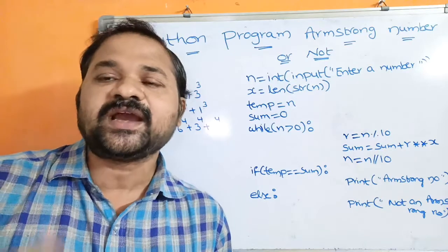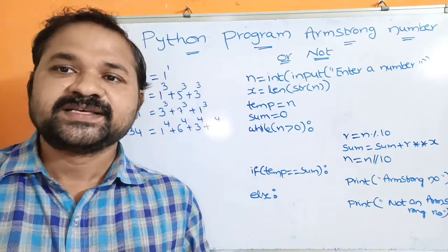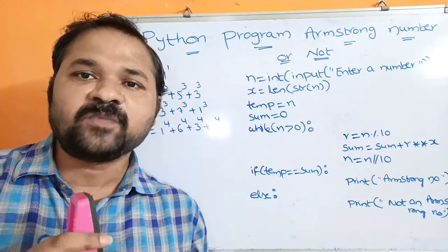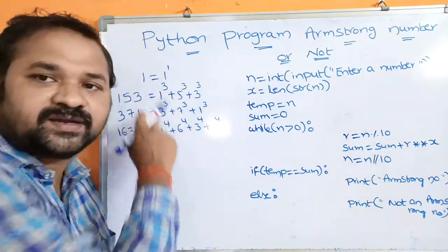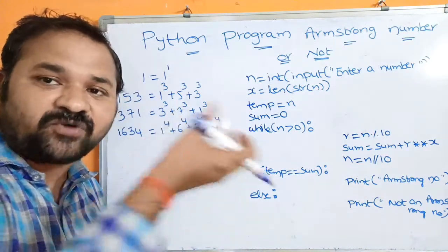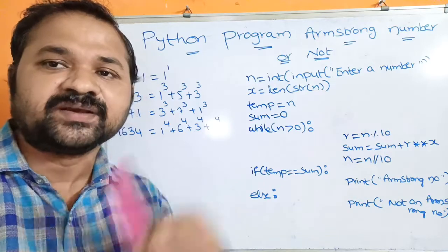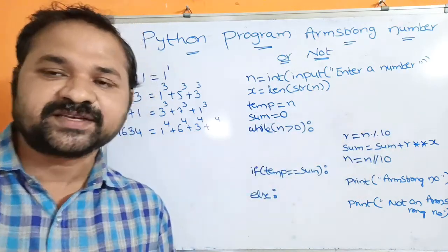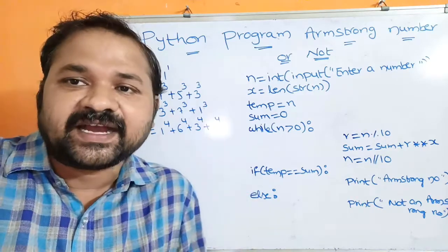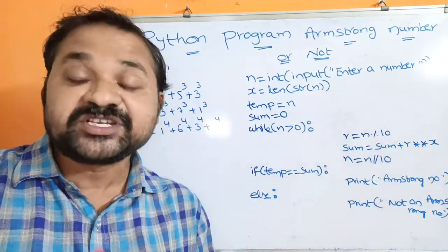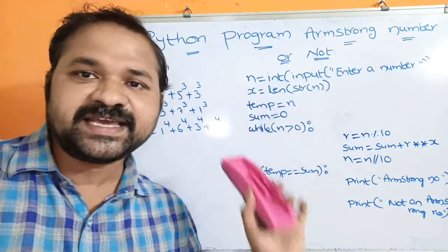But this is not the 100% correct definition for an Armstrong number. The correct definition is: first we have to find out the number of digits of the given number and perform the power operation based on the number of digits. We sum all the digits raised to that power, and if we get the original number, then it is called an Armstrong number.